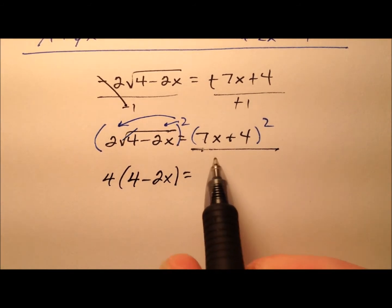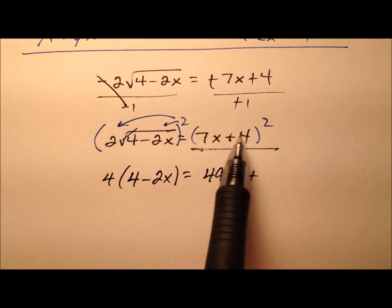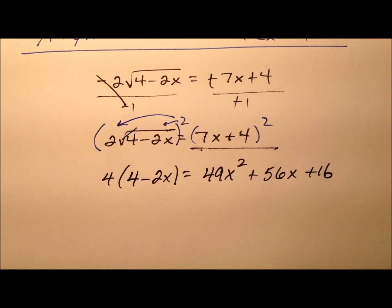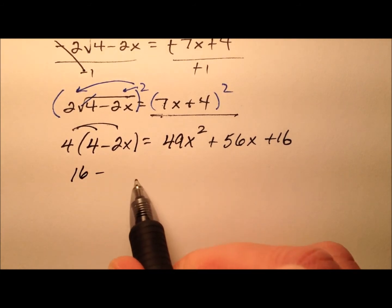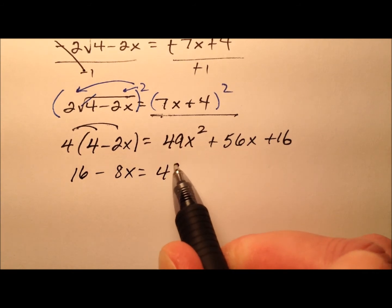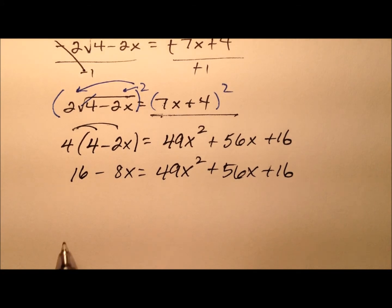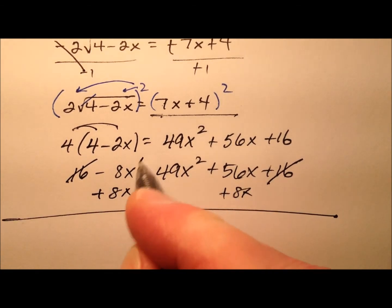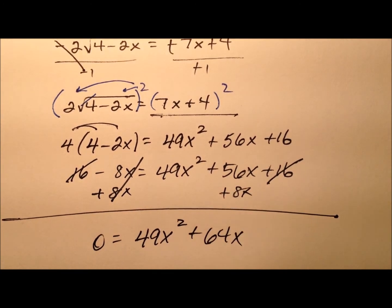And then we're going to square this binomial. So it'll be 49x squared plus, and 7x times 4 is 28x, but we have two of those, so 56x and then plus 16. We'll distribute, so 16 minus 8x equals 49x squared plus 56x plus 16. This is actually not bad because these 16s will cancel and we can add 8x to both sides. We'll have 0 equals 49x squared plus 64x.